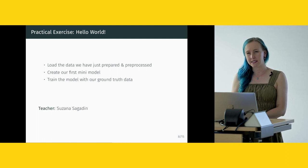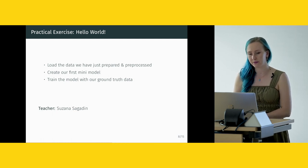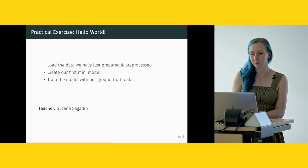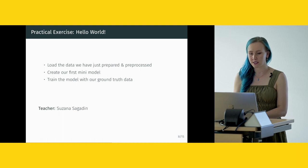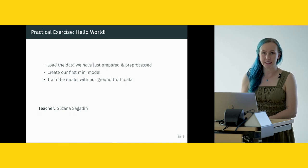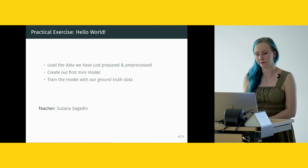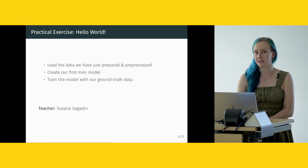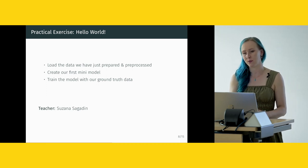The second exercise is the Hello World, also called the mini model. There we will load the data prepared in the previous session, continue some preprocessing, create a first mini model, and run it as an IPython Jupyter notebook. We will then train the model with ground truth data and see if it has learned anything — with more detail to follow in the large model exercise.